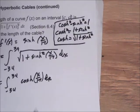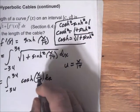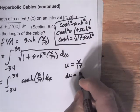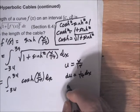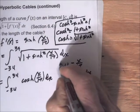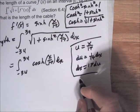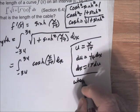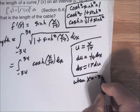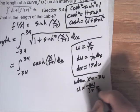We can do a substitution. Let u equal x over 17, so it's a composite function with inside x over 17. Then du equals 1 over 17 dx, which means dx equals 17 du. We also change the limits of integration: when x is negative 34, u is negative 34 over 17, which equals negative 2. And when x is 34, u equals 2.